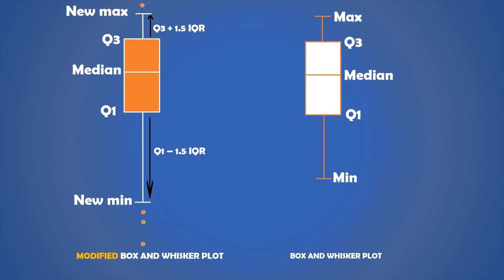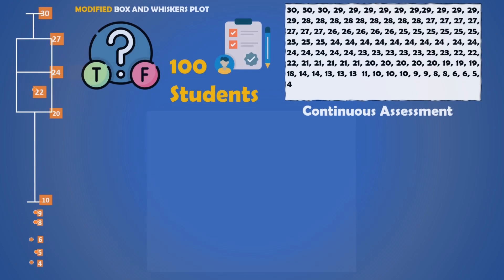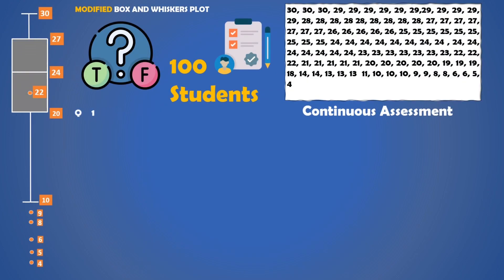So let's go back to our question. For this data set, let's start with the box. Our Q1, which is the first quartile, is 20. Our Q2, which is the median, is 24. And Q3 is 27. Now, what is this point over here? This is the mean score, which is 22 points.